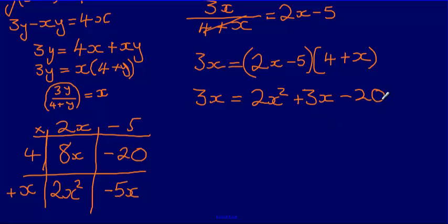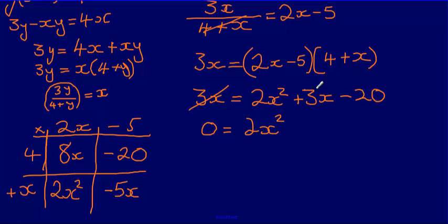We have a quadratic equation: 2x squared plus 3x minus 20 equals 3x. To solve a quadratic, set it equal to 0 by subtracting 3x from both sides. The 3x terms cancel, leaving 0 equals 2x squared minus 20. Notably, there is no x to the power of 1 term in this quadratic.